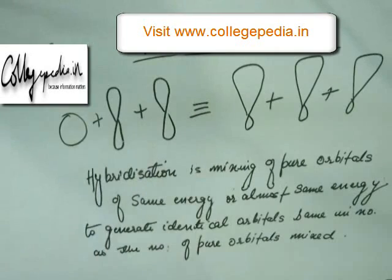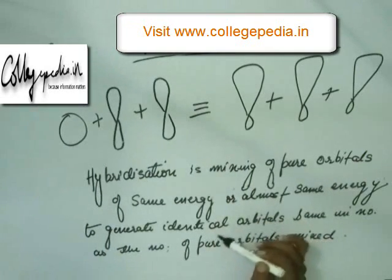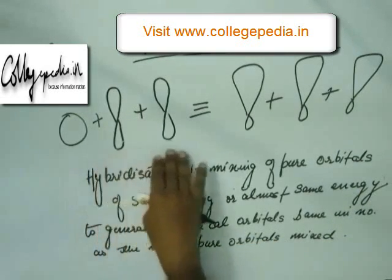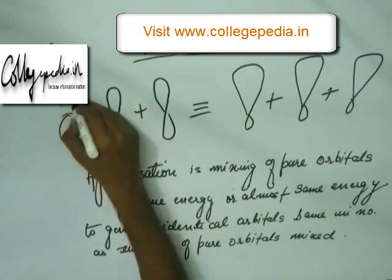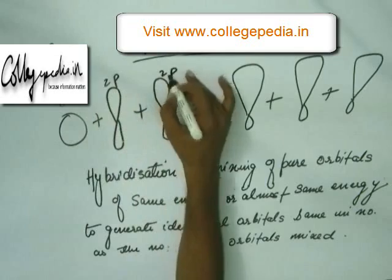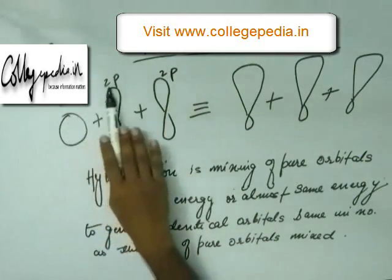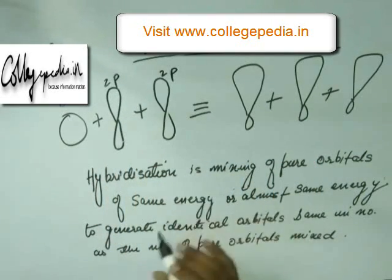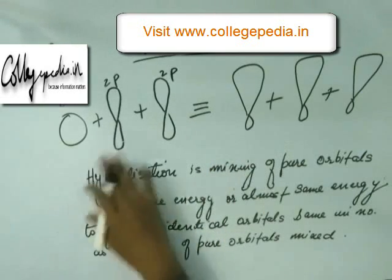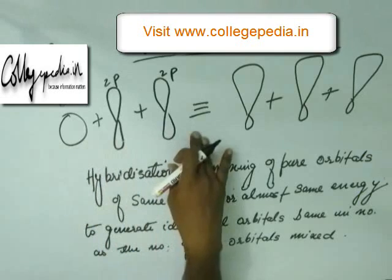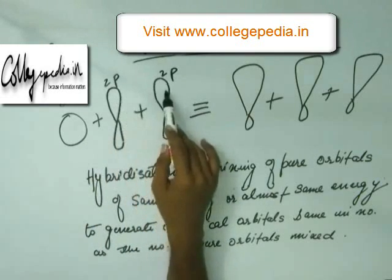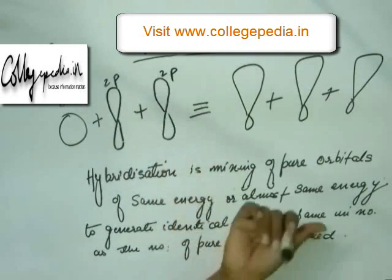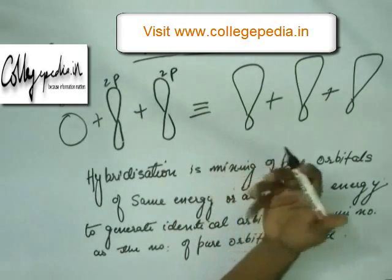Hybridization is the mixing of pure orbitals of same energy or almost same energy. Same energy occurs when both the principal quantum number and azimuthal quantum number are the same. For example, 2s, 2p, and 2p have the same principal quantum number (2) but different azimuthal quantum numbers (l=0 and l=1), so they have almost the same energy. Two 2p orbitals have the same principal and azimuthal quantum numbers, so they have exactly the same energy.